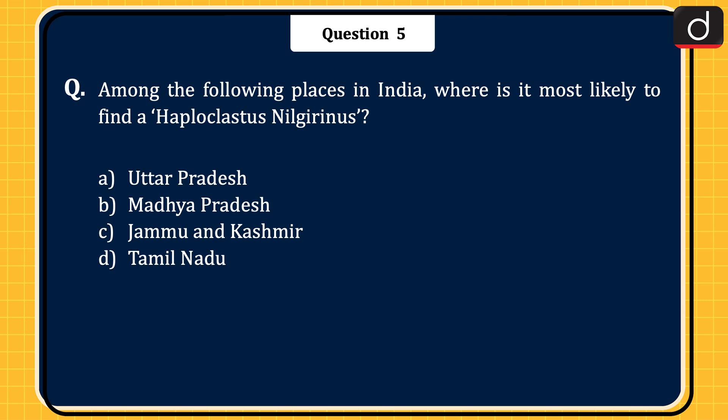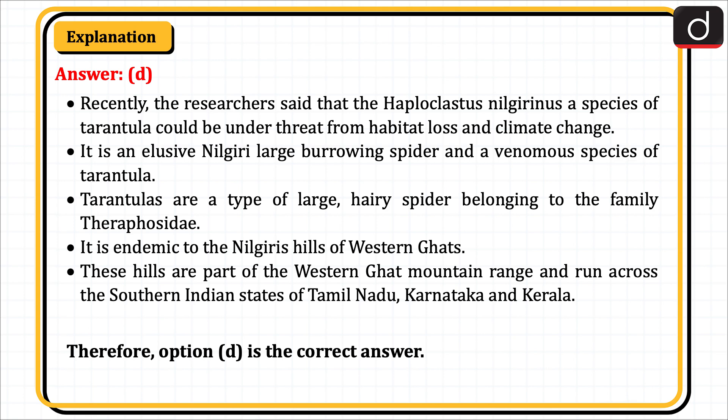The next question: among the following places in India, where is it most likely to find Haploclastus neilgirinus? Uttar Pradesh, Madhya Pradesh, Jammu and Kashmir, or Tamil Nadu? The correct answer is option D, Tamil Nadu. Recently, researchers said that Haploclastus neilgirinus, a species of tarantula, could be under threat from habitat loss and climate change. It is an elusive Nilgiri large burrowing spider and a venomous species of tarantula. Tarantulas belong to the family Theraphosidae. It is endemic to the Nilgiri Hills of the Western Ghats, which run across the southern Indian states of Tamil Nadu, Karnataka and Kerala. Therefore, option D is the correct answer.